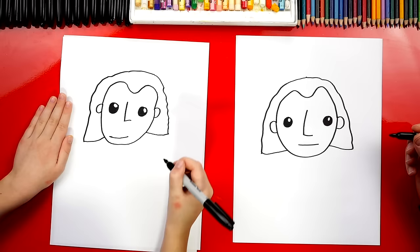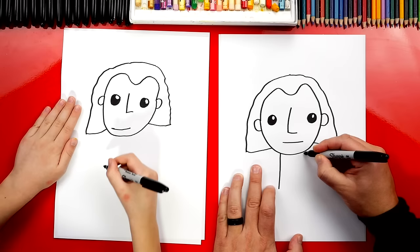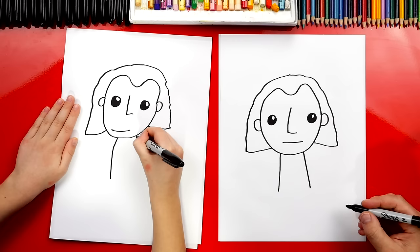He needs a body now. Let's draw two lines coming down from his chin. Draw one on each side, coming down. I like drawing cartoon versions of famous people, important people.